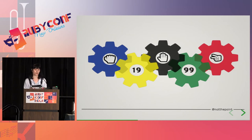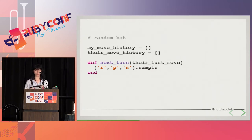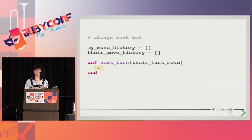First, let's look at the most well-known strategy: the random bot. Each bot has a state containing our past moves and our opponent's past moves, and we have a next_turn method which will return our next chosen move. We can see here that we are randomly returning one of R, P, or S — R for rock, P for paper, and S for scissors. Against the always-rock bot, the random bot would still only win around 50% of the time. Random is often considered optimum as it is impossible to gain advantage over a truly random opponent.